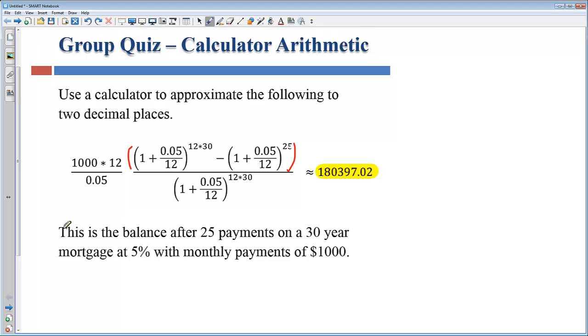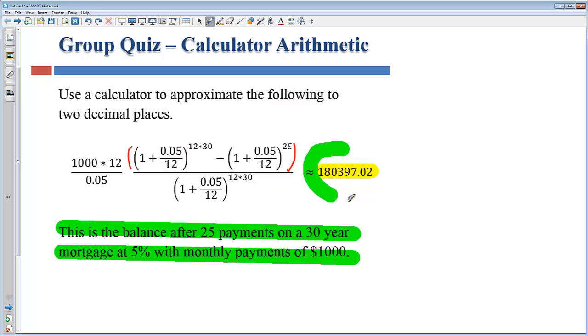Below I told you what this number actually represents. This is the balance after twenty five payments on a thirty year mortgage at five percent with a monthly payment of a thousand dollars. So basically what you owe is one hundred eighty thousand three hundred ninety seven dollars and two cents if you want to pay it off right now.